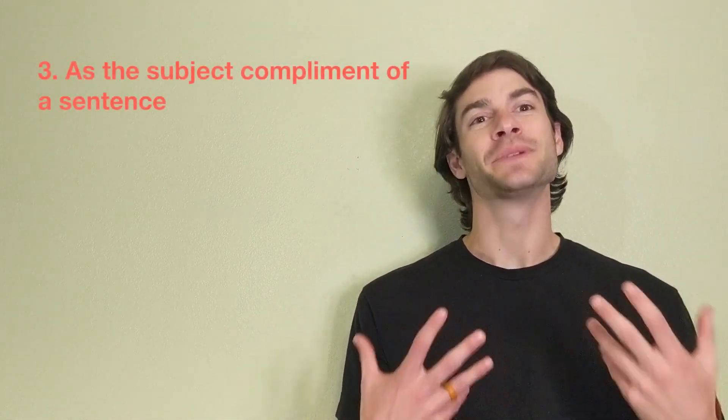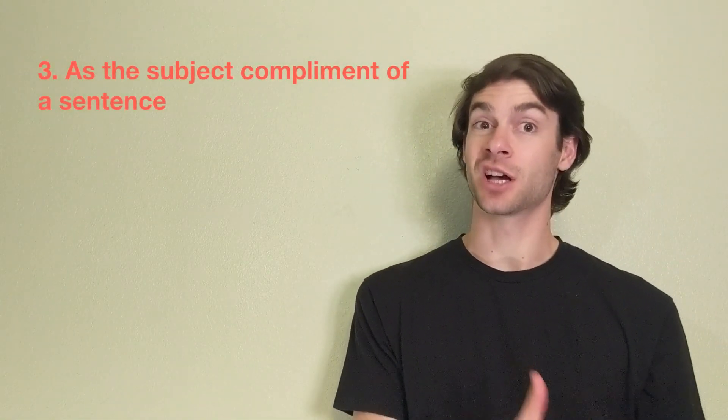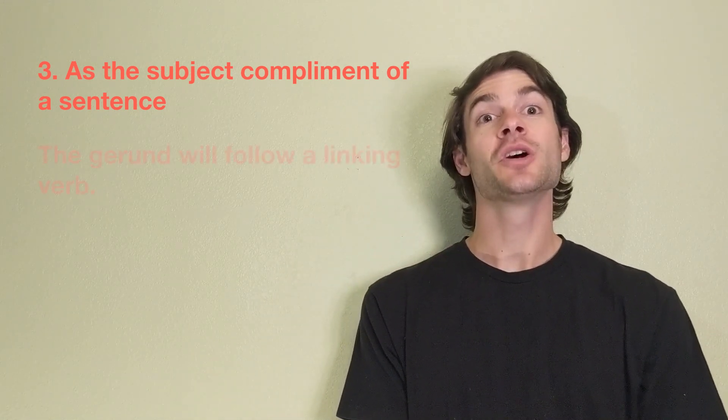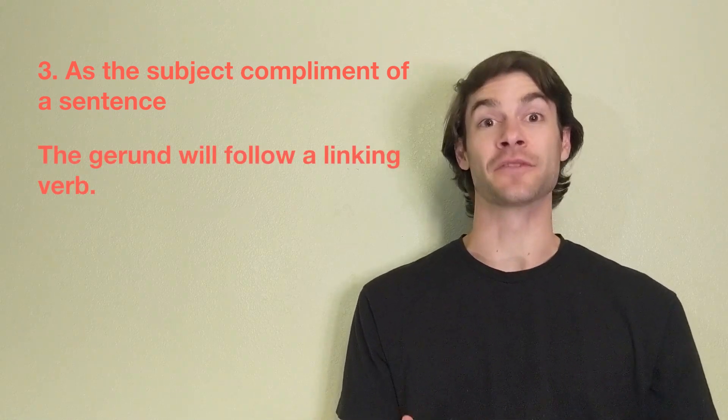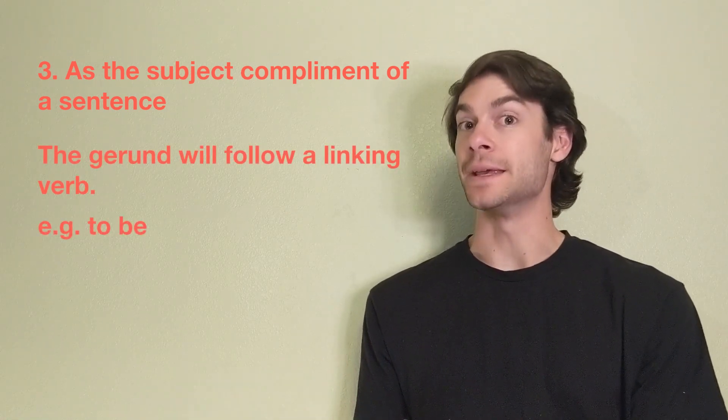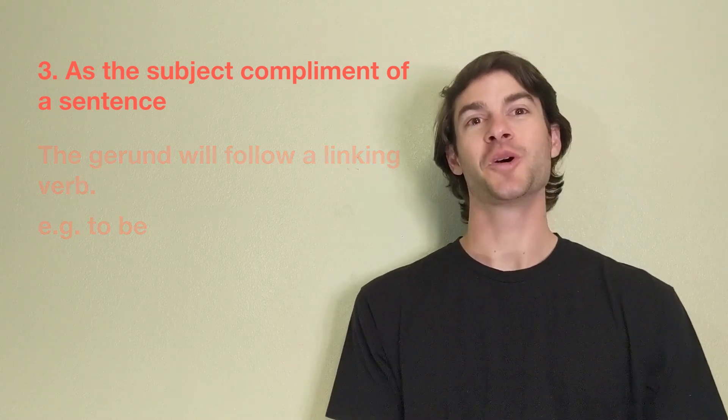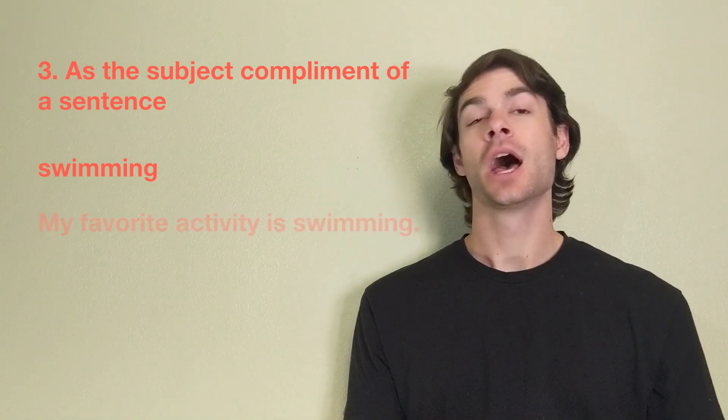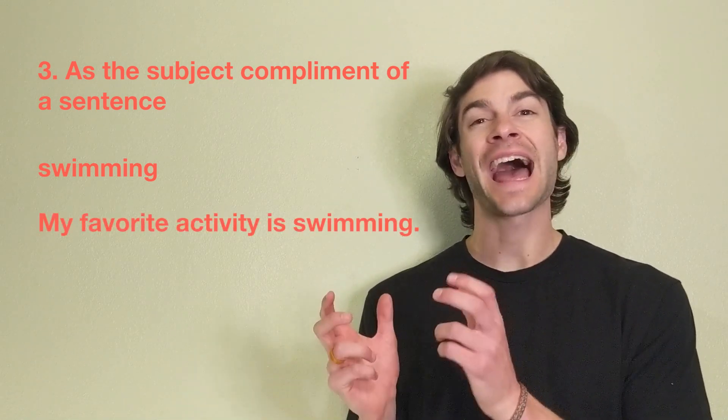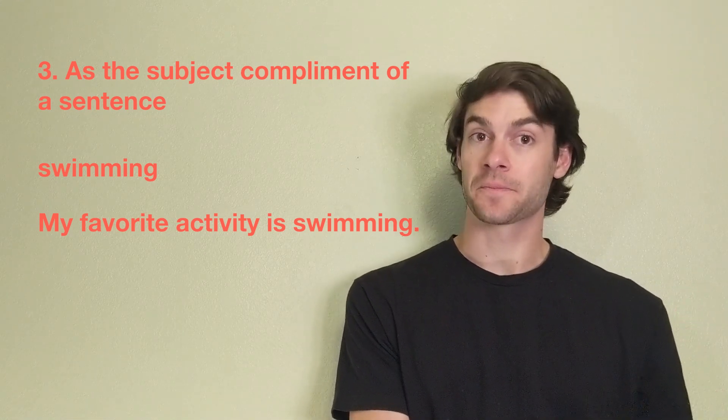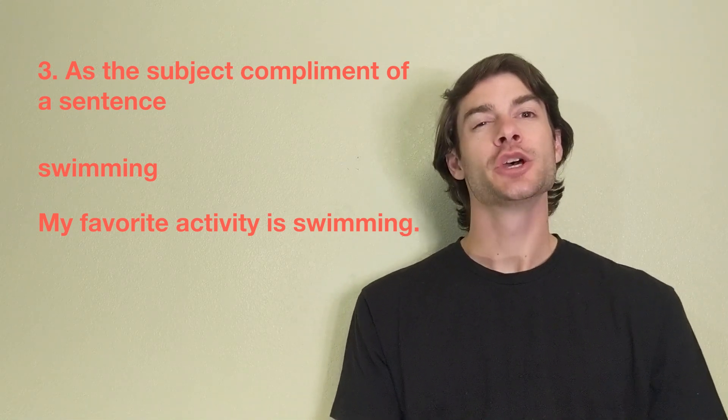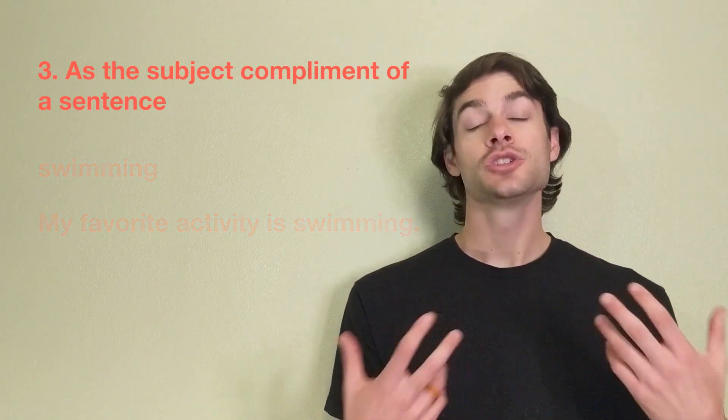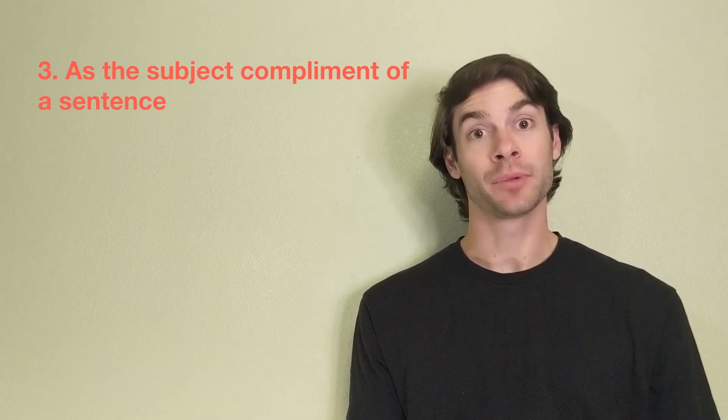When a gerund is placed as the subject complement, our third way, the gerund will follow a linking verb, such as the verb to be. For example, we can take the gerund swimming and make the sentence, my favorite activity is swimming. In this sentence, swimming describes favorite activity. So, it is our subject complement.